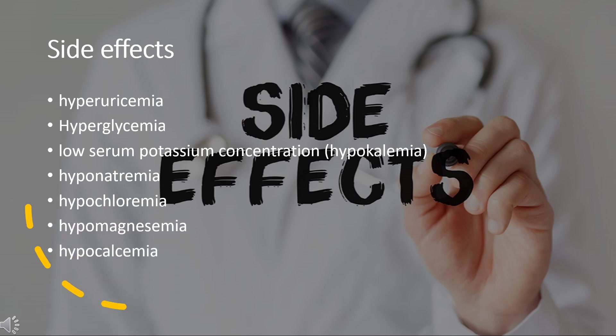Side Effects: Furosemide can lead to gout, caused by hyperuricemia. Hyperglycemia is also a common side effect. The tendency, as for all loop diuretics, to cause low serum potassium concentration (hypokalemia) has given rise to combination products, either with potassium or with the potassium-sparing diuretic amiloride (co-amilofruse). Other electrolyte abnormalities include hyponatremia, hypochloremia, hypomagnesemia, and hypocalcemia.